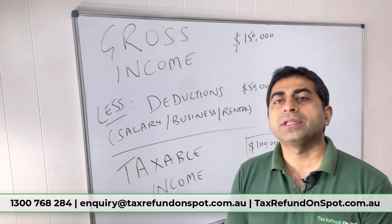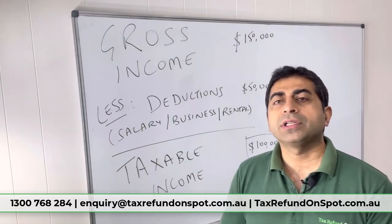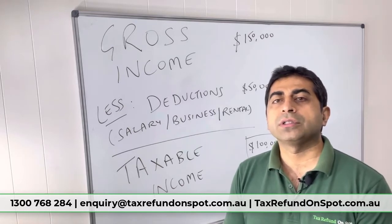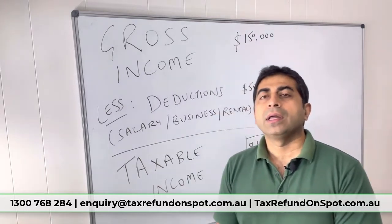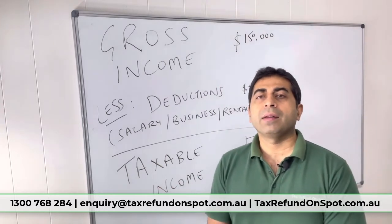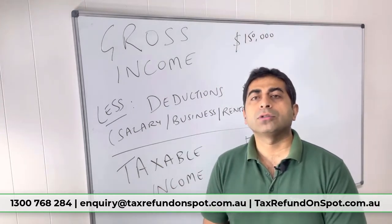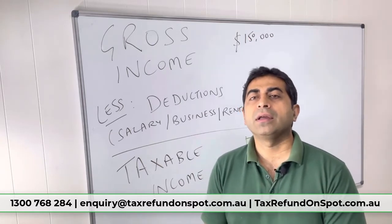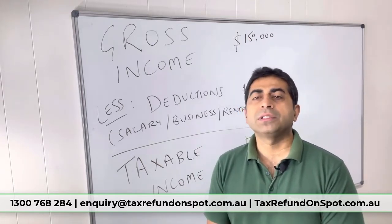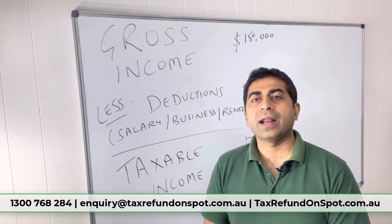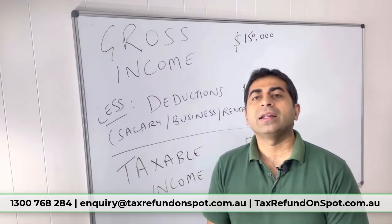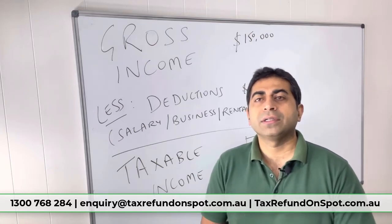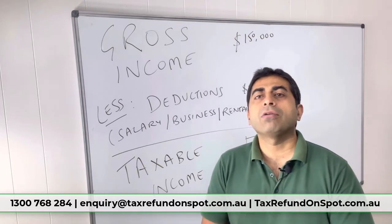Gross income basically means the total amount you earn from all sources. It can be rental income, business income, income from employment, a super payout, royalty, or even overseas income. All that income is clubbed together and added — that is called gross income, and it is shown in the tax return.